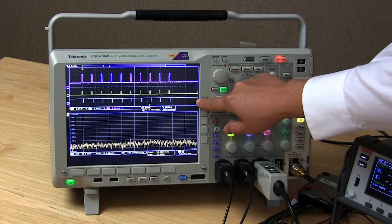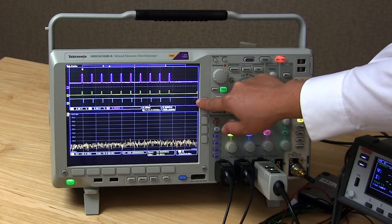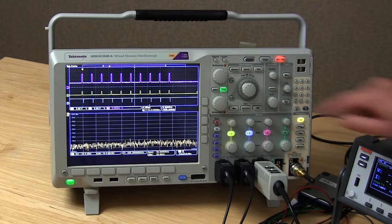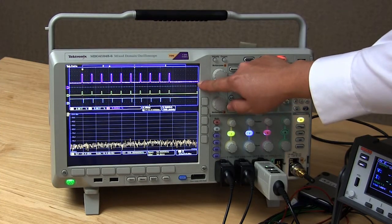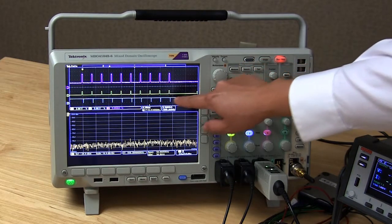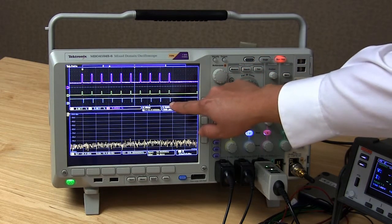The blue trace at the bottom is the meter complete signal from the Series 2280S, indicating that its measurement is complete and it's ready for another trigger. Looking at the purple line, we can clearly see 10 separate current pulses, each with a corresponding trigger pulse in yellow and a meter complete pulse in blue.